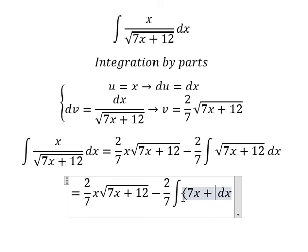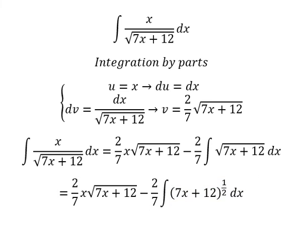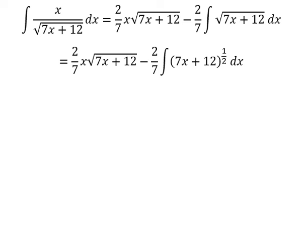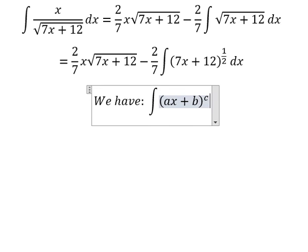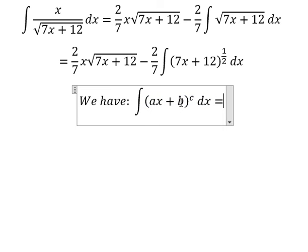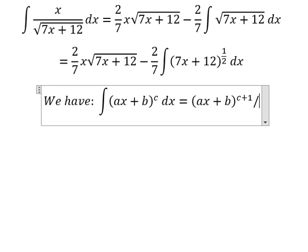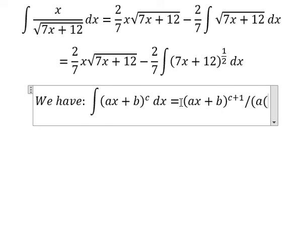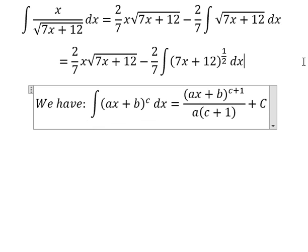7x plus 12 to the power of 1 over 2. So we have the formula: the integration of (as plus b) to the power of c ds equals to (as plus b) to the power of (c plus 1) over a multiplied by (c plus 1). I will put the constant C. Now we can apply this formula.